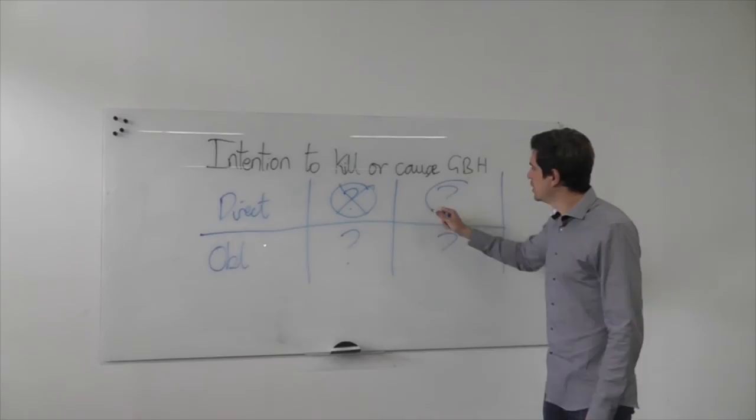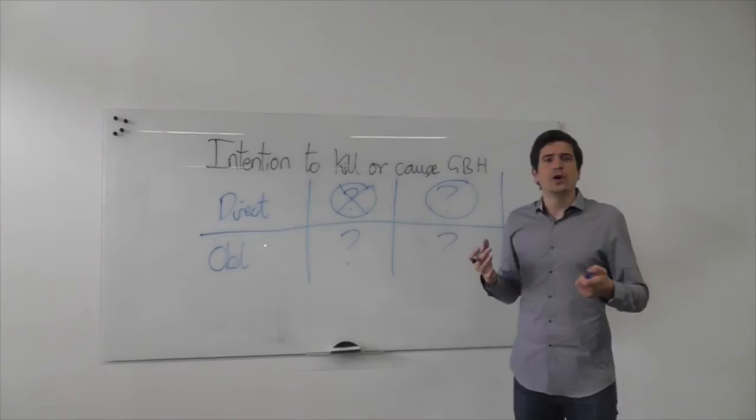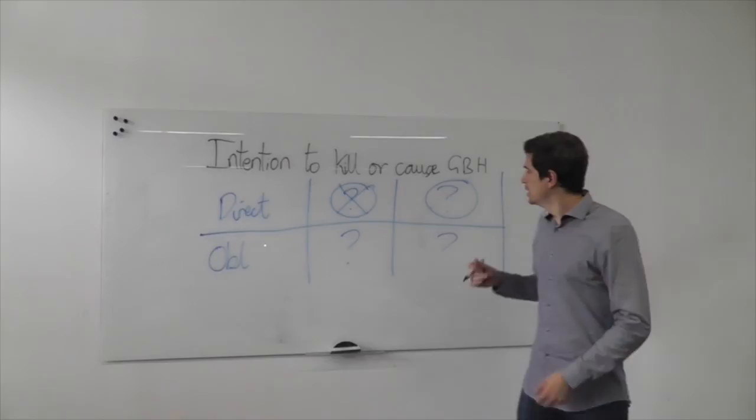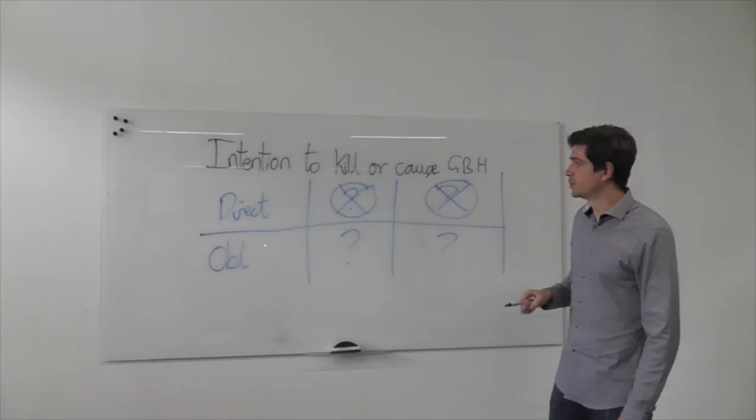This is perhaps more debatable, but we could ask ourselves, what happens if the victim jogged out of the way at the last moment or was dropped or managed to avoid the bullet? Would our defendant be unhappy? No, of course he wouldn't. It's his friend. He would be very happy. So therefore it's at least debatable that perhaps there isn't a direct intention to cause grievous bodily harm.